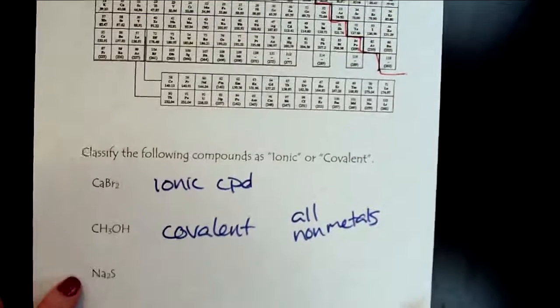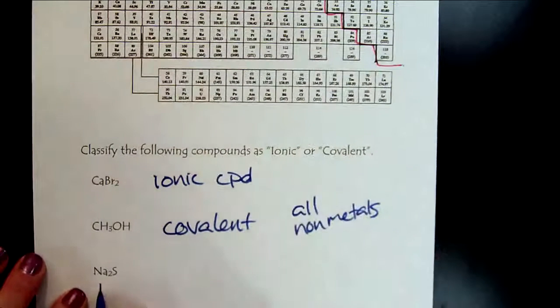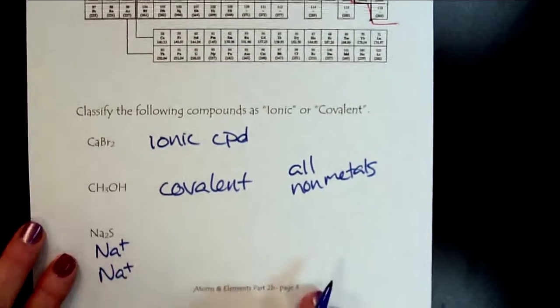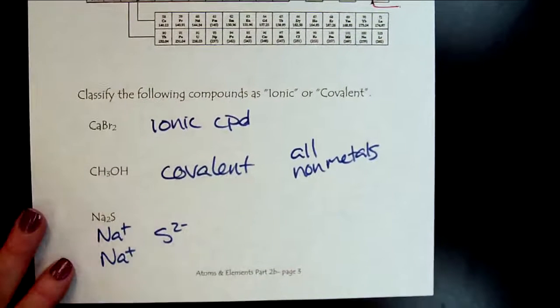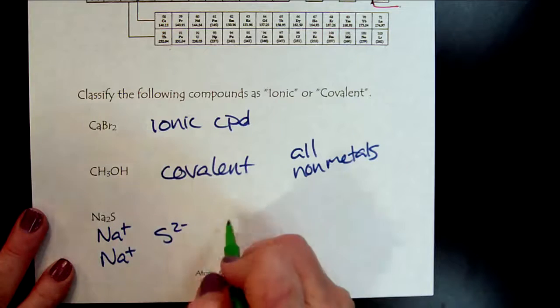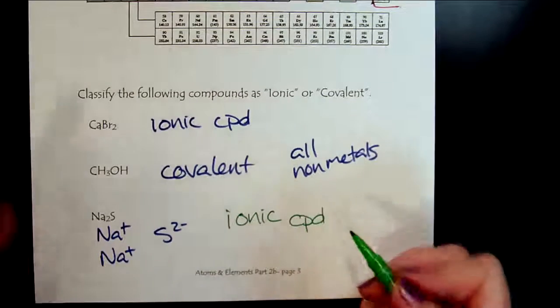And then last but not least, here's our buddy sodium, which we know is an alkali metal. And sulfide. So we have sodium plus one. So we're going to need two of those. And then we have our buddy sulfide. So we have our metal and our non-metal. So we know it's ionic.